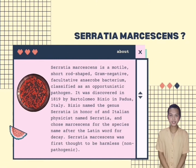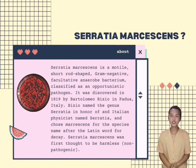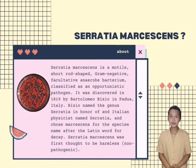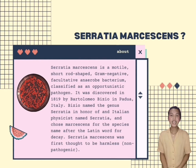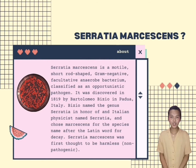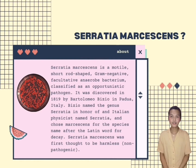So, what is Serratia marcescens? Serratia marcescens is a genus, a motile, short, rod-shaped, gram-negative facultative anaerobic bacterium classified as an opportunistic pathogen in the family Yersinaceae. It was discovered by Bartolomeo Bizzeo in Padua, Italy. Bizzeo named the genus Serratia in honor of an Italian physicist named Serratia and chose marcescens for the species name after the Latin word for decay.